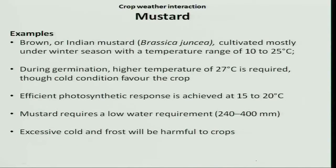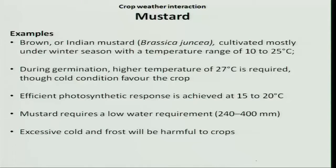Let us see the crop-weather interaction for mustard crop. It is also one of the important oilseed crops grown in most parts of northern India during the Rabi season. Cultivation starts especially during October and November, and harvesting is done during March and April. It is an important winter season crop that can tolerate a temperature range of 10 to 25 degrees Celsius.